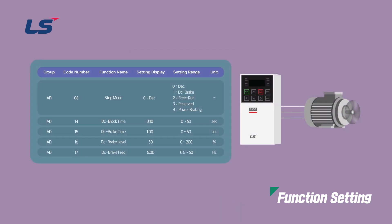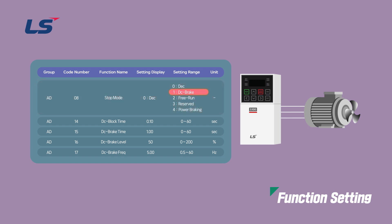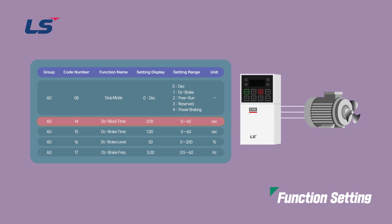The DC brake stop method is used for high speed spindle motors, which can move slightly due to high speed inertia even after stopping, to apply direct current braking to bring the motor to a complete stop. Select 1 DC brake in stop mode at AD8. The frequency set in AD17 DC brake frequency will apply DC voltage to the motor and stop it when it reaches that frequency level during deceleration. AD14 DC block time sets the time to block the AC drive output before starting DC braking. AD15 DC brake time sets the time to apply DC voltage to the motor. AD16 DC brake level sets the amount of DC braking based on the motor's current rating.